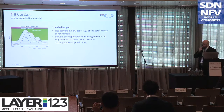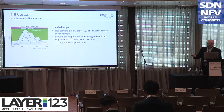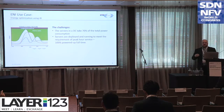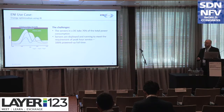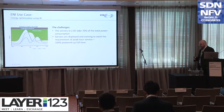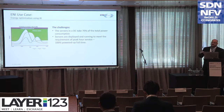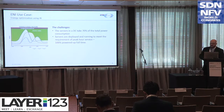The second use case is energy optimization. Power consumption is a large share of any OpEx for a network operator. The data center is thought to take up about 70% of total power consumption, which is a big impact. The services running in that data center are generally running to meet a peak-hour requirement. Having consistently high power draw when it's not actually being used very often is an obvious place for optimization.